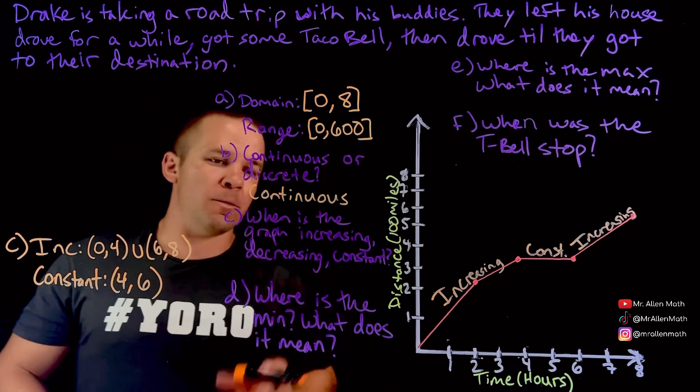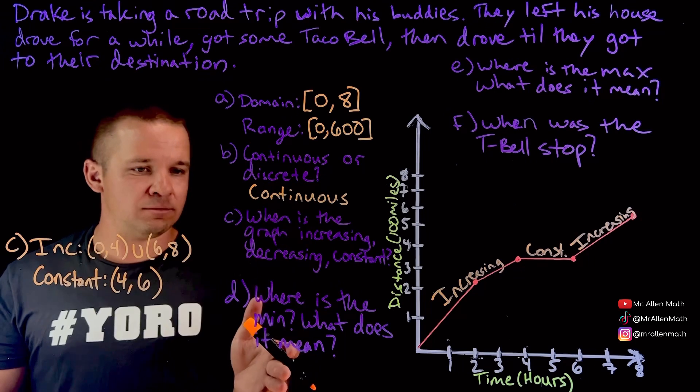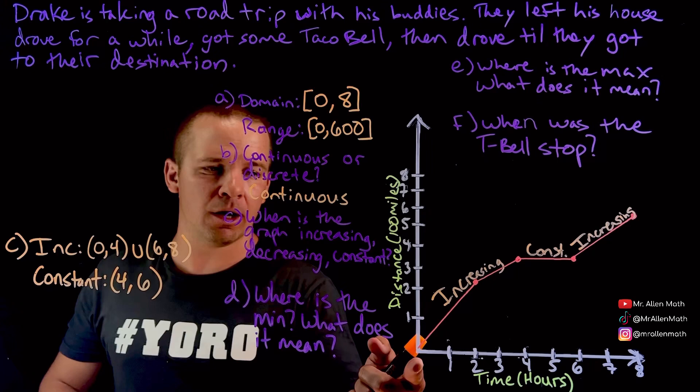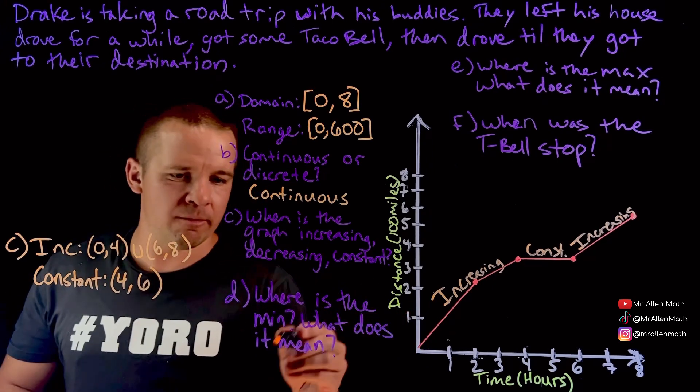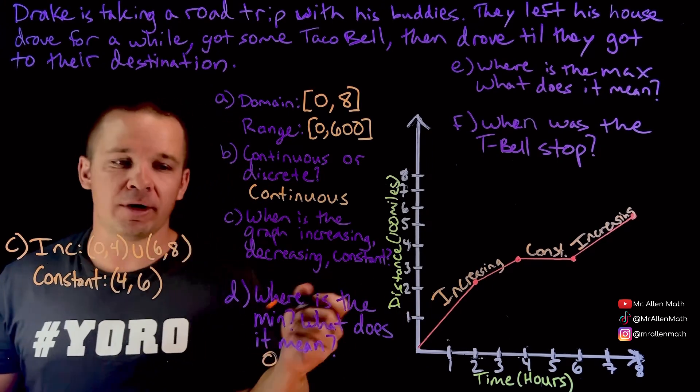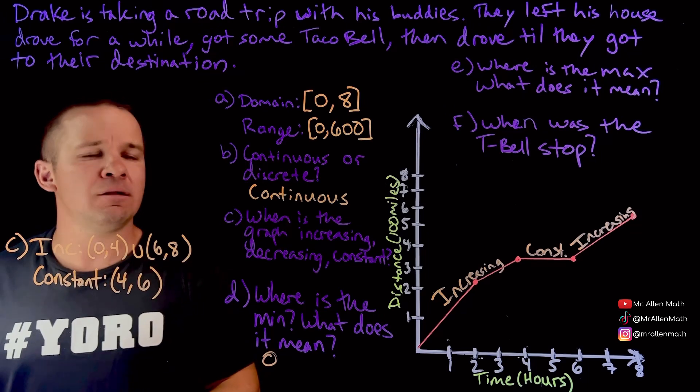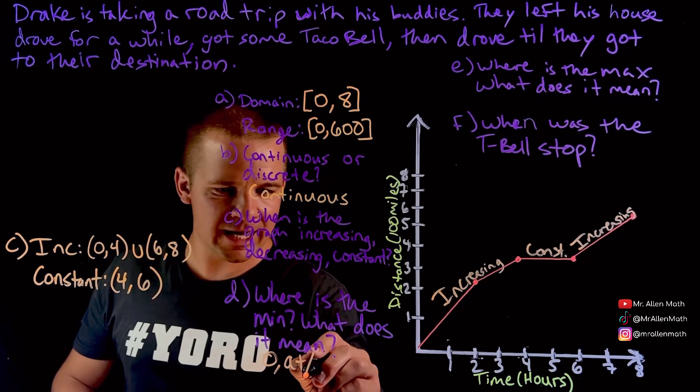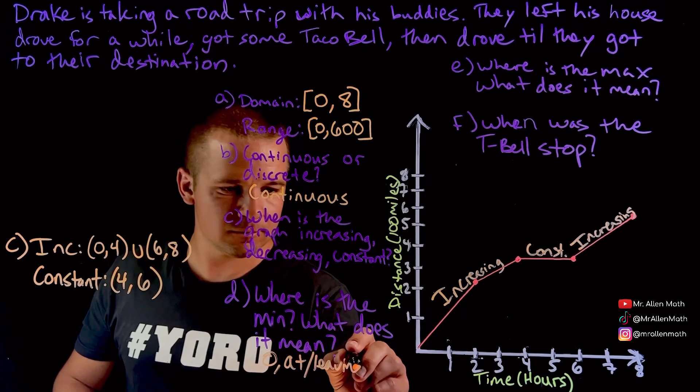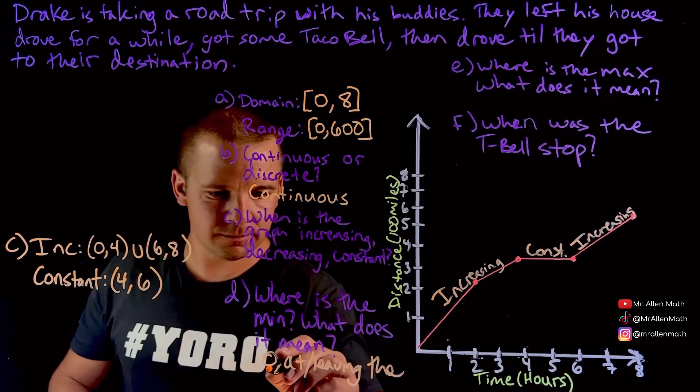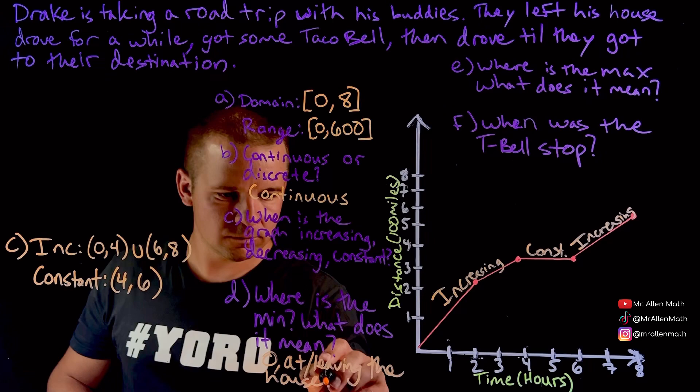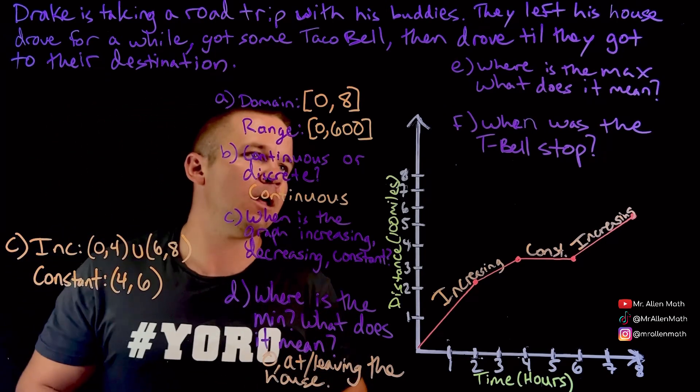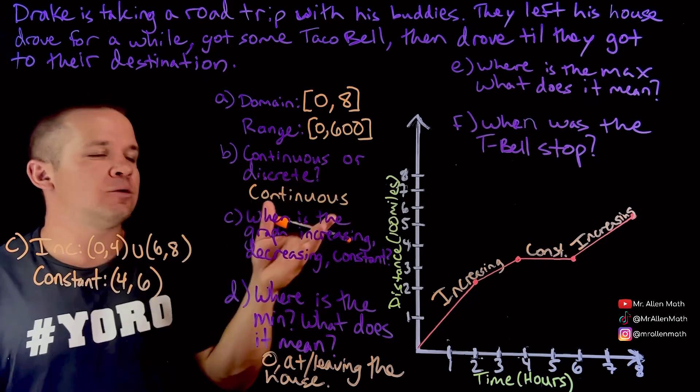Part D here. Where is the minimum and what does it mean? Well, the lowest point on my graph here is at the origin, zero, zero. Okay. So the minimum would be zero or at the point, zero, zero. What does it mean? That's when they're still at the house, right? At or maybe leaving the house. Or haven't left the house yet or just about to step out the door. Something like that.